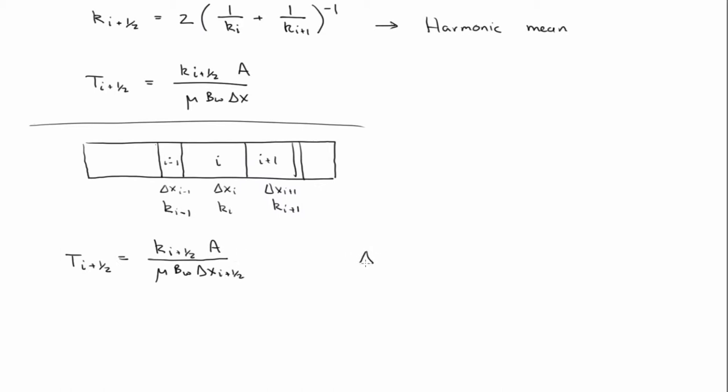And if you work through all the details, you'd see that delta x i plus delta x i plus, I'm sorry, delta x at the half grid block.